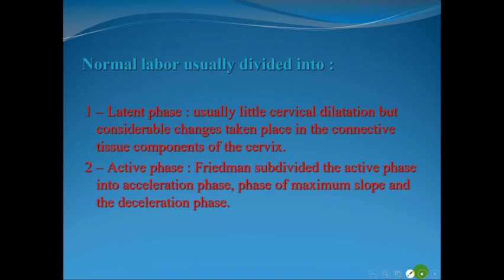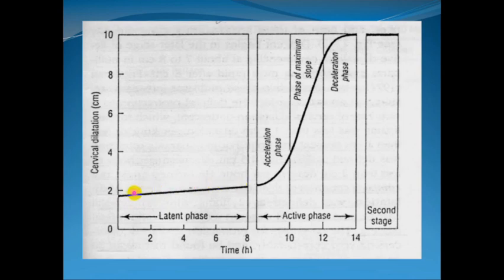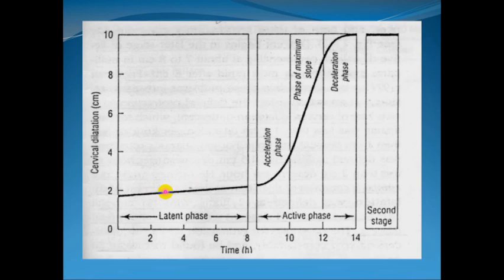Normal labor is divided into phases: the latent phase and the active phase. The latent phase occurs below three centimeters dilatation, and this phase is taken for effacement of the cervix. Effacement is the period of shortening and softening of the cervical canal — normally about two to four centimeters — during which the cervix starts to be incorporated as part of the lower uterine segment.